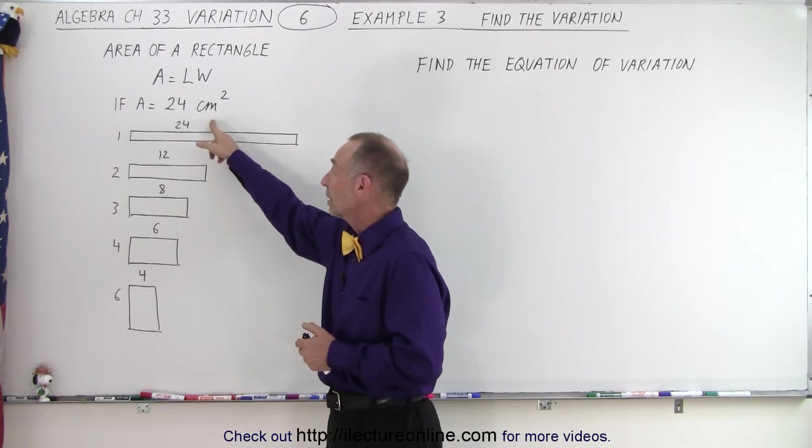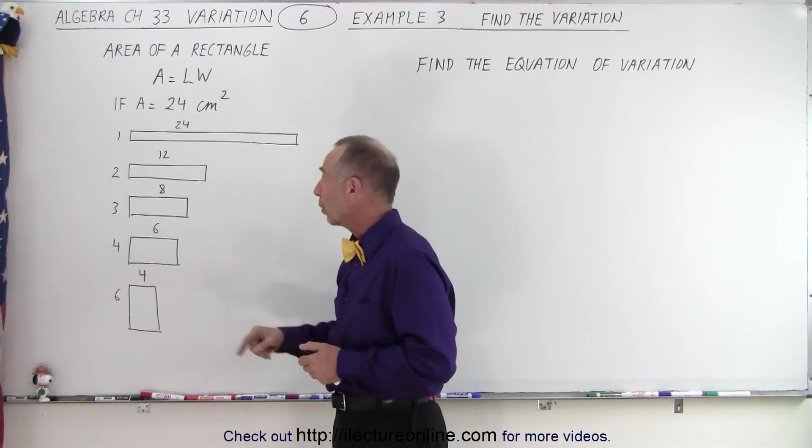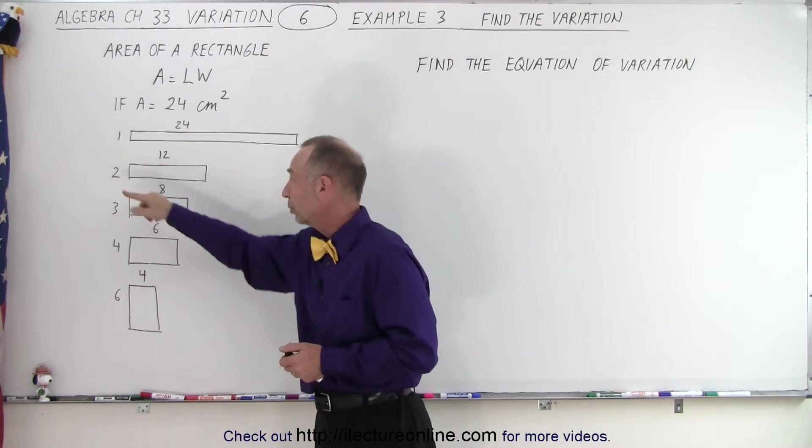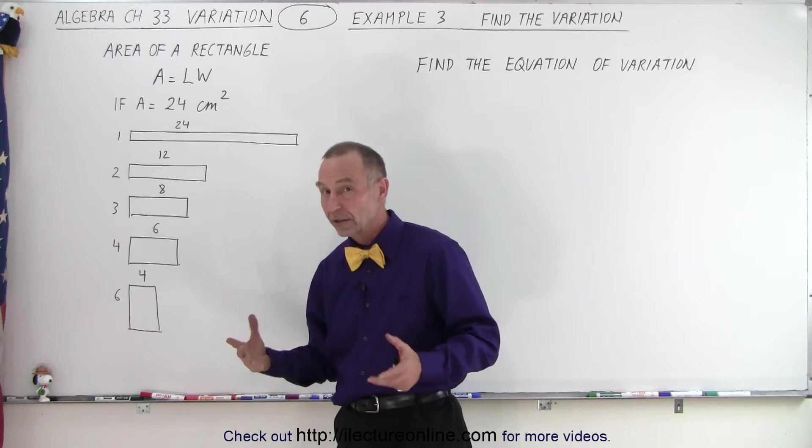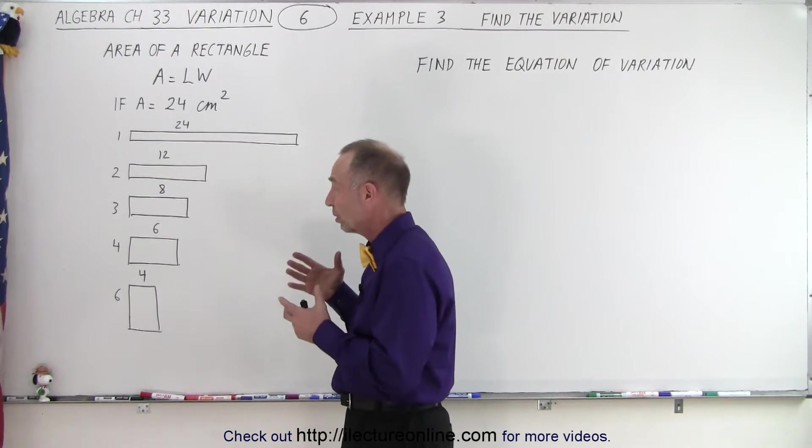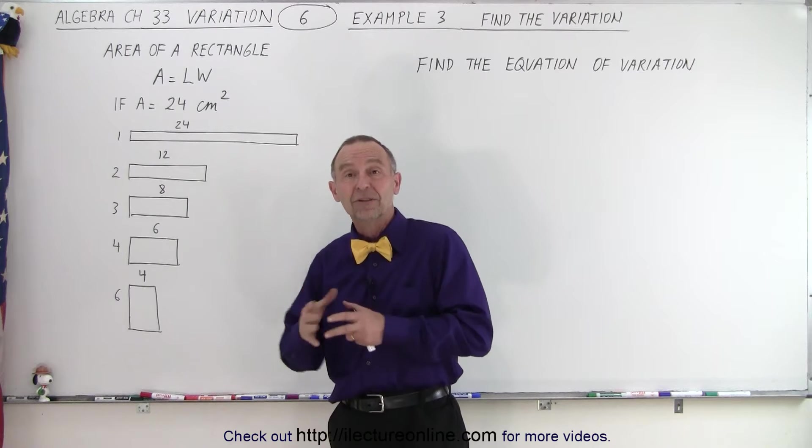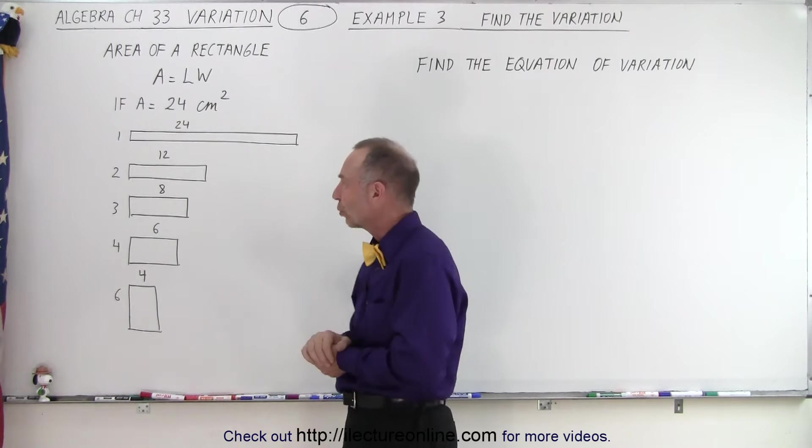We can have a length of 24 centimeters and a width of one centimeter, or a length of 12 centimeters and a width of two, eight and three, six and four, four and six. And you can see there's a lot of different ways in which we can draw that rectangle. Each of them has an area of 24 square centimeters.